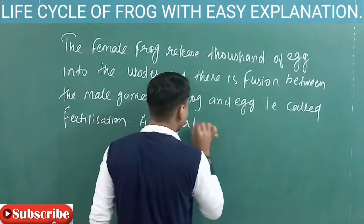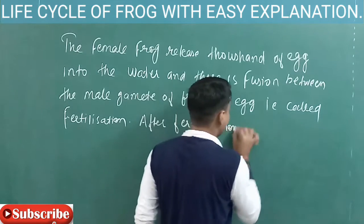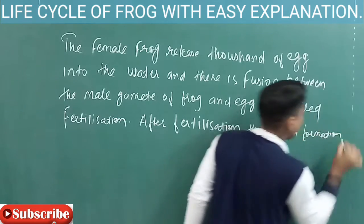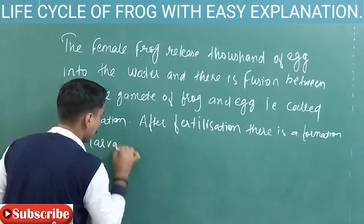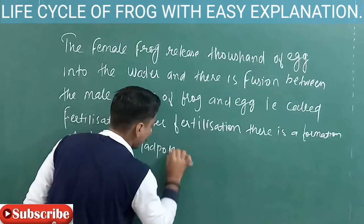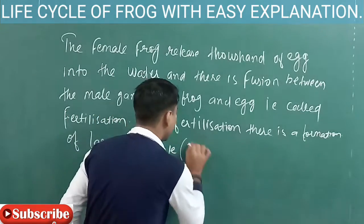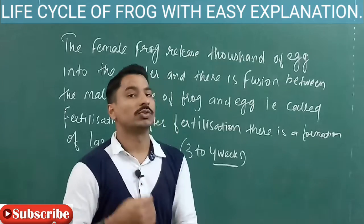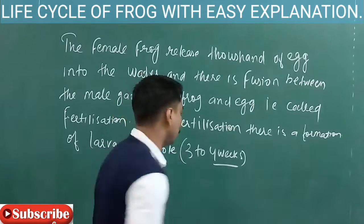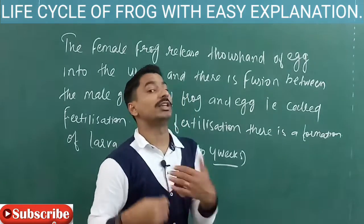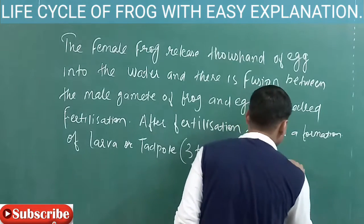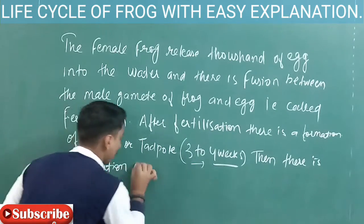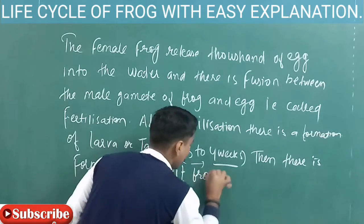The formation of larva or tadpole takes three to four weeks. That means from fusion and fertilization to larva formation, the time duration is three to four weeks. After the larva, there is a formation of adult frog after nine weeks.